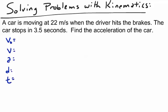The first thing we do is write out our five variables: v0, v, a, d, t. Then we write the things that we know. We know the starting velocity is 22 meters per second. We know the ending velocity is zero. Now it doesn't say that it's zero, but it does say the car stops.